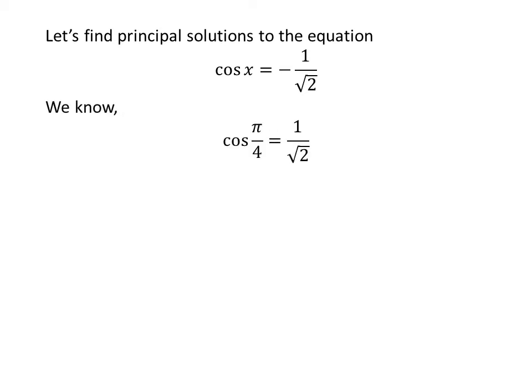We know the value of cosine of pi upon 4 is 1 upon square root of 2. We also know the famous trigonometry identity: cosine of pi minus a is equal to minus cosine of a. The proof of this identity is given in the video appearing in the upper right corner, and the link is also given in the description.